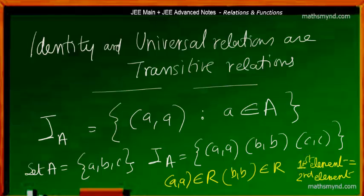Such that 'a' is an element of set A. So it simply means that if you are dealing with a set having elements a, b, and c, in the identity relation only the pairing up of the same elements occurs — that is, the ordered pairs consist of (a,a), (b,b), and (c,c).